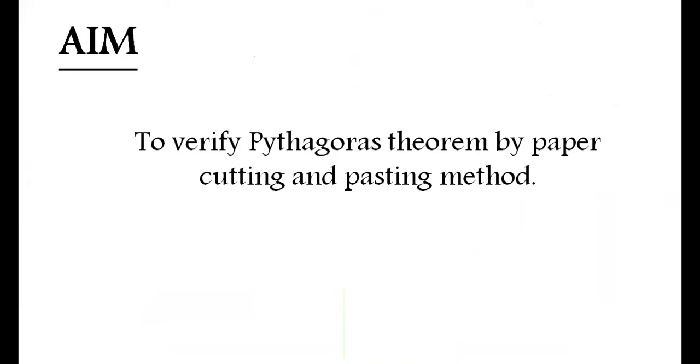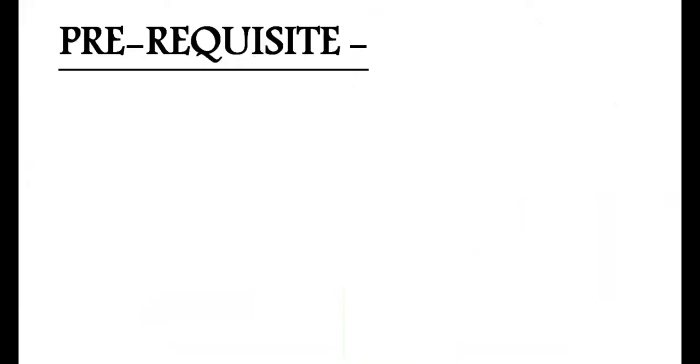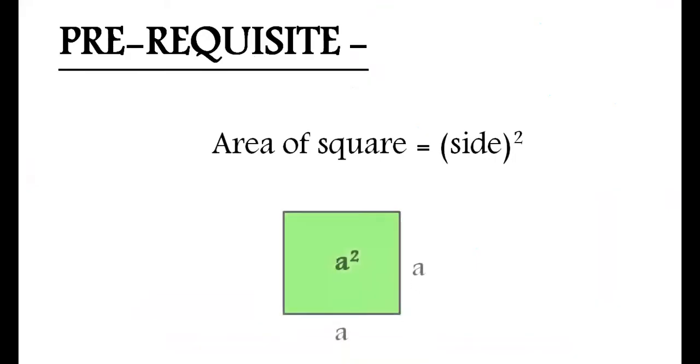For this activity we should know the formula for area of a square, which is nothing but side squared. The materials that we will require for this activity are four different color papers.